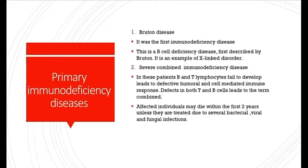Some of the Primary Immunodeficiency Diseases are Bruton disease. It was the first immunodeficiency disease. This is a B-cell deficiency disease, first described by Bruton. It is an example of X-linked disorder.